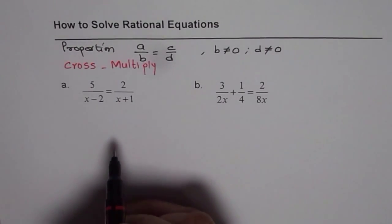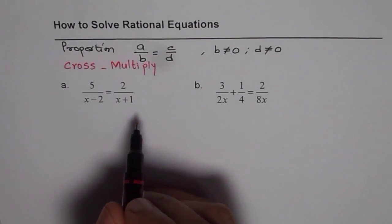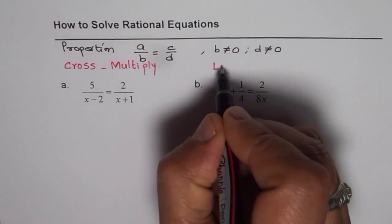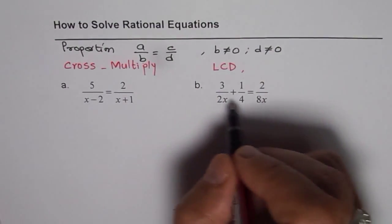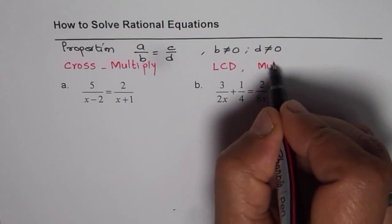If you do not have a proportion, then my suggestion is find the lowest common denominator and multiply both sides by lowest common denominator.